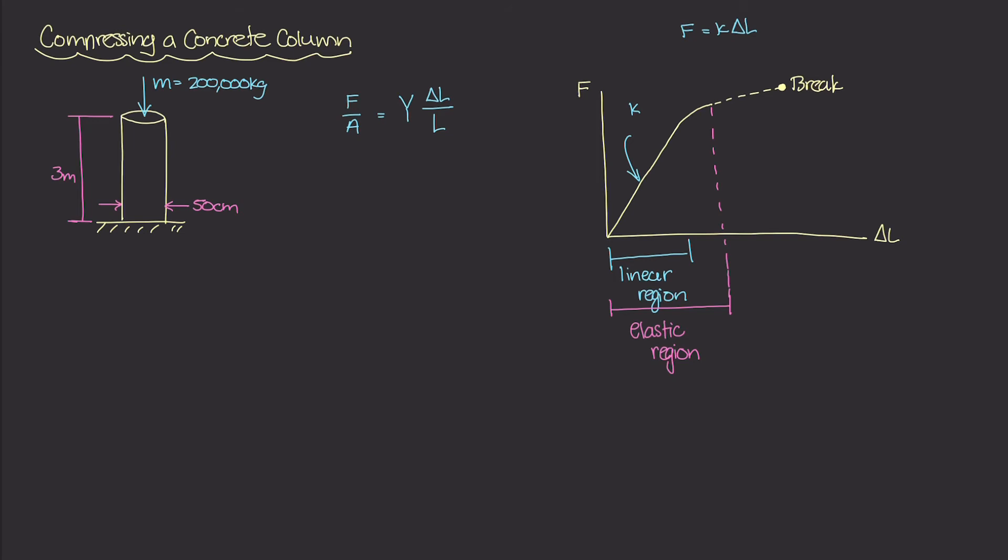So because the mass is 200,000 kilograms, we need that in terms of force. And we know that force is equal to mass times gravity, where g is our gravitational constant. So our force is going to be 200,000 kilograms times 9.81 meters per second squared.